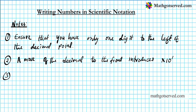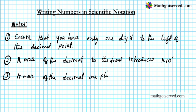Moving the decimal one place to the back means you've multiplied the number by ten. So to neutralize that multiplication, you have to introduce times ten to the negative one.